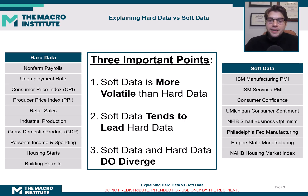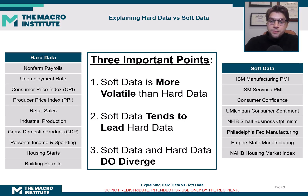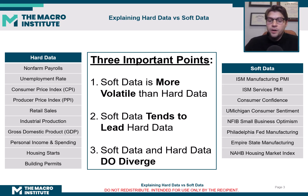On the right, we see a list of soft data series that we use a lot. We have the ISM Manufacturing PMI, the University of Michigan Consumer Sentiment Report, and the NFIB Small Business Optimism Index. These are all surveys. We also have the Regional Fed Survey Reports.